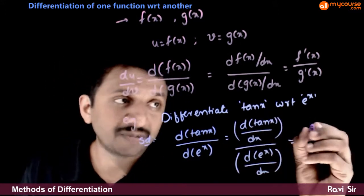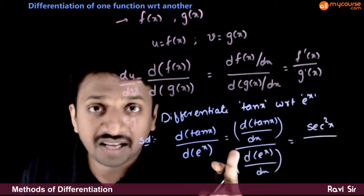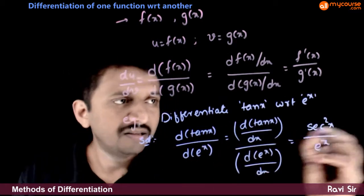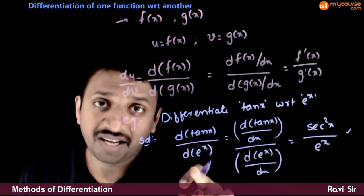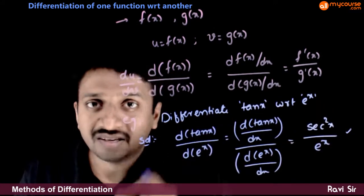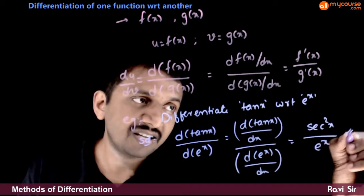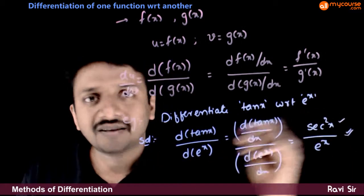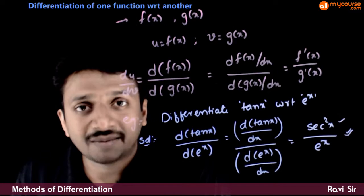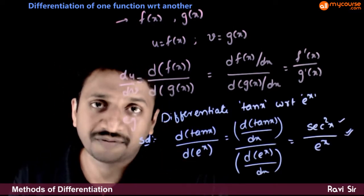d of tan x by dx is secant square x. d of e to the power x by dx is e to the power x. So, d of tan x by d of e to the power x is nothing but the differentiation of tan x, which is secant square x, divided by the differentiation of e to the power x, which is e to the power x. It is as simple as this. So now let us take some examples where we will try to differentiate one function with respect to another function.